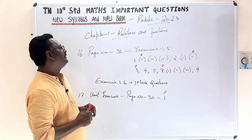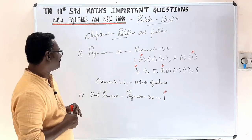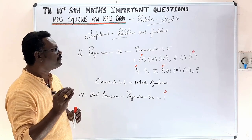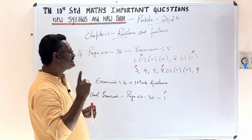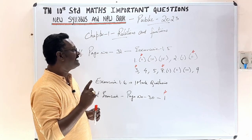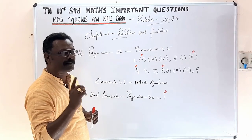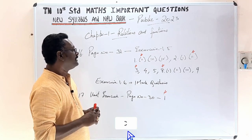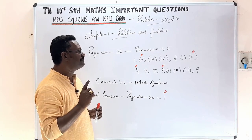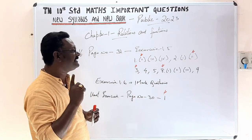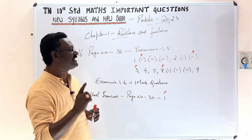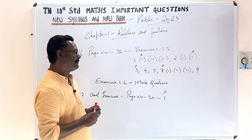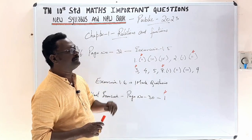Page number 31, Exercise 1.5: 1st sum, 2nd sum (1st and 2nd subdivision), 3rd sum, 4th sum, 5th sum, 8th sum (1st, 2nd, and 3rd subdivisions), and 9th sum are all important to study for the exam.